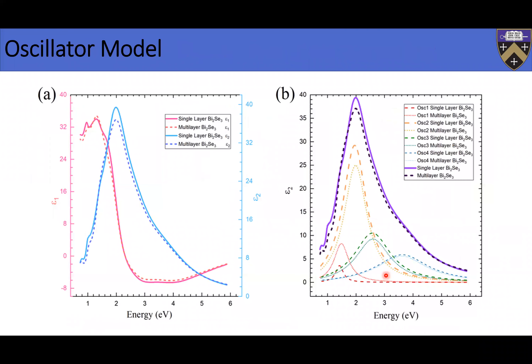Just one other point before I finish: I can analyze the bismuth selenide grown via the heterostructure and the bismuth selenide grown directly on sapphire. With careful analysis, we can show that all the oscillator widths are slightly smaller for bismuth selenide grown on the heterostructure — which means you have better quality bismuth selenide when it's grown on a heterostructure.